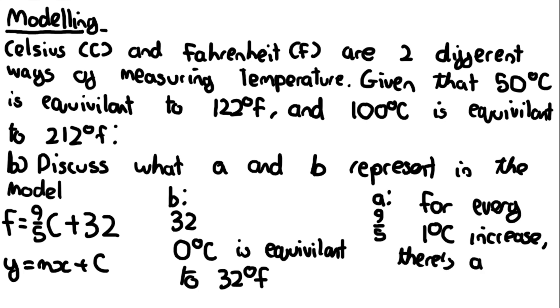There's a 9 over 5 degree Fahrenheit increase. That's what it represents. For every 1 degree Celsius increase, there's a 9 over 5 degree Fahrenheit increase. That's what the gradient and the slope actually represent: for every 1 degree, how much degree Fahrenheit goes up. So that's what the gradient represents and this is the answer to part b.